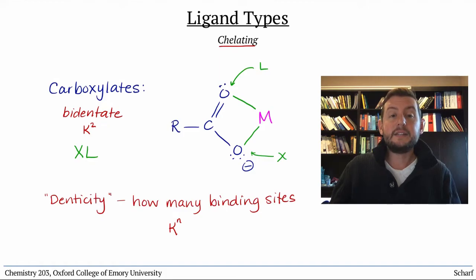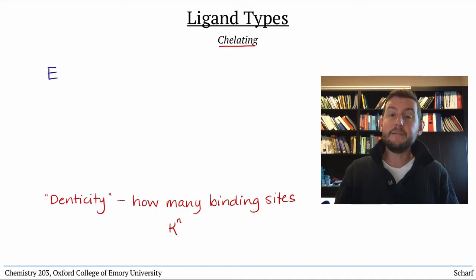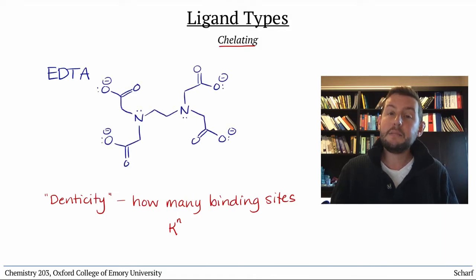Chelating ligands don't always use all of their potential binding sites. EDTA, a common reagent in biology labs, is ethylenediamine tetraacetate. It typically binds to metals using its two nitrogen lone pairs and its four anionic oxygen atoms. The neutral oxygens don't usually bind, so EDTA usually binds in a kappa VI fashion.